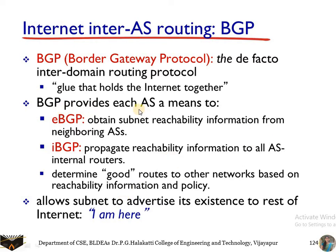BGP provides each autonomous system a means to communicate. eBGP, called External BGP, helps in communication between neighboring autonomous systems. iBGP, Internal BGP, helps to distribute information within the autonomous system — that is, between routers within a single autonomous system.